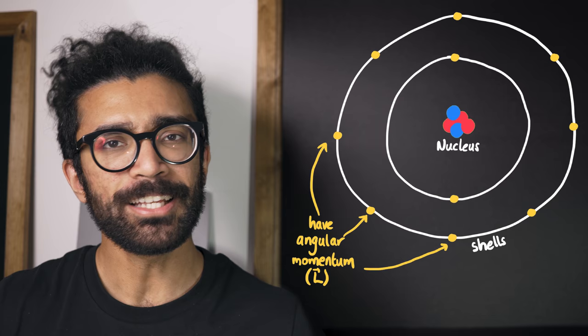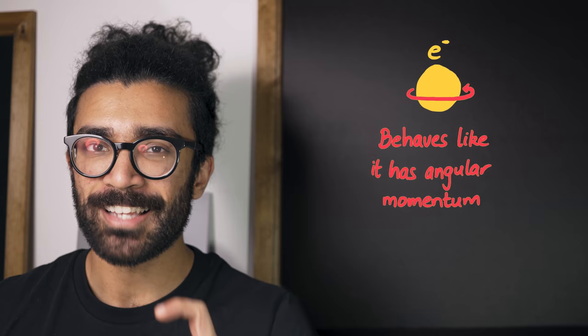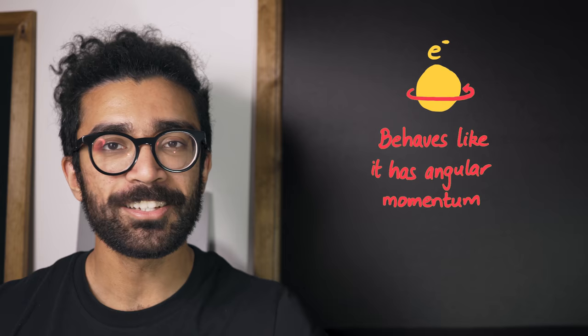The really interesting thing with electrons, though, is that even if we take them out of the atom, even if we're now just looking at an electron sitting there by itself, with nothing else surrounding it, it still has some amount of angular momentum. Even if this electron is not spinning or travelling along a curved path or doing any of the things that we normally expect in order for an object to have angular momentum, the electron has angular momentum. It behaves like it has angular momentum. Now, this extra little amount of angular momentum that these electrons have, regardless of where they're found, is known as spin.